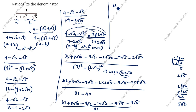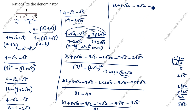So the final answer is 36 plus 8 root 10 minus 19 root 2 minus 13 root 5, all divided by 41. Thanks for watching this video.